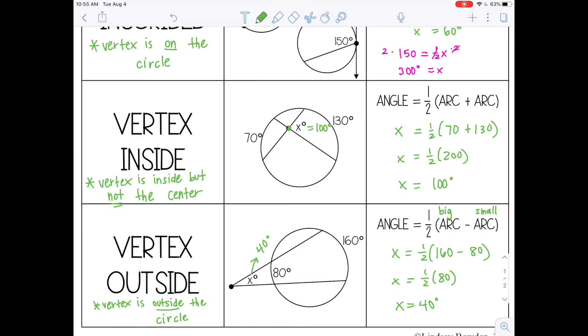All right, so those are the types of angles in a circle. If you would like to see more geometry resources from me, you can check out geometriesquad.com.